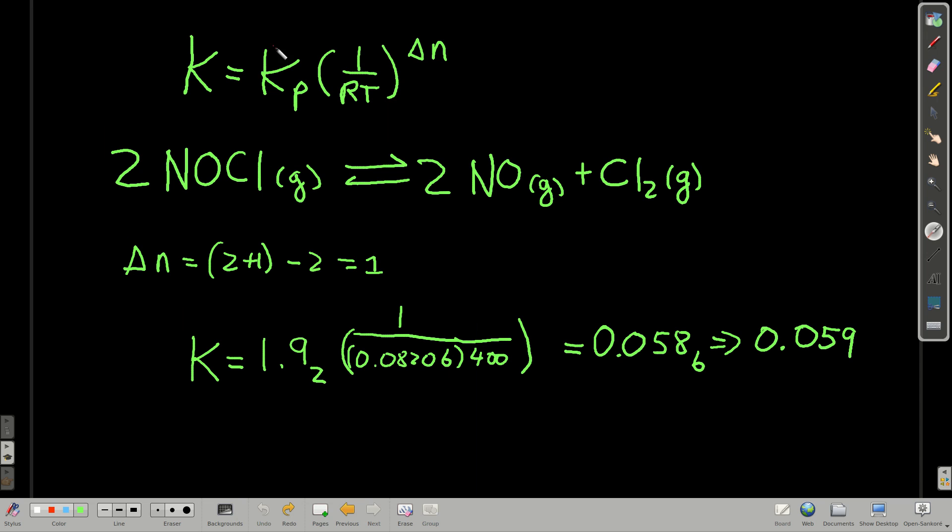Now let's get K. Well, that's easy. We have this relationship. K is just Kp times 1 over RT to the delta n. What's delta n? It's the sum of the coefficients for the products, 2 plus 1, minus the coefficients for the reactant, 2. So 2 plus 1 minus 2 is just 1. So K, in this case, is 1.92 times 1 over RT to the first power. Plug this in your calculator, and I get about 0.59.